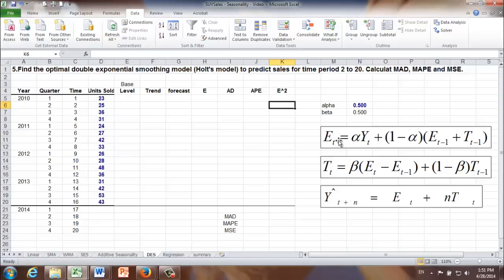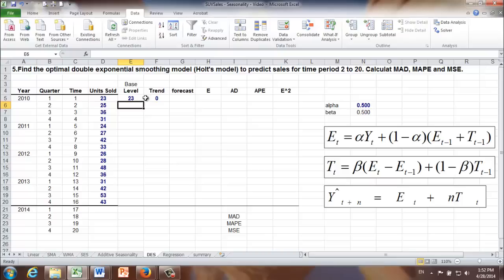Let's look at one of those formulas. For example, ET. E is the base level. In order to find base level for time period 1, we need E0 and T0, and we don't know where they are. So we're going to do initialization. By convention, the first base level will equal the very first actual sales number, and the trend is the difference between those two. Because actual sales equals the base level, the trend will be 0.